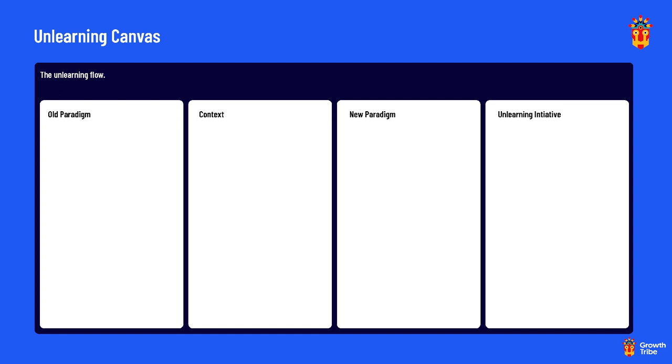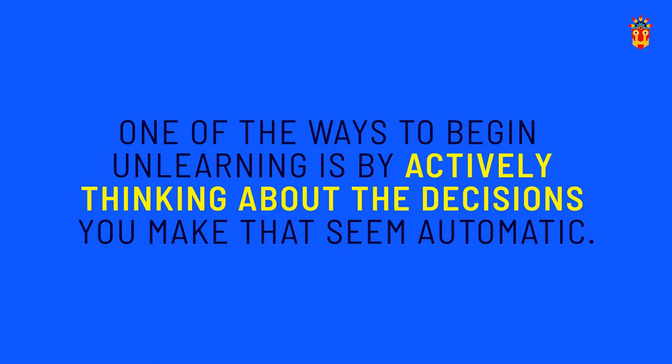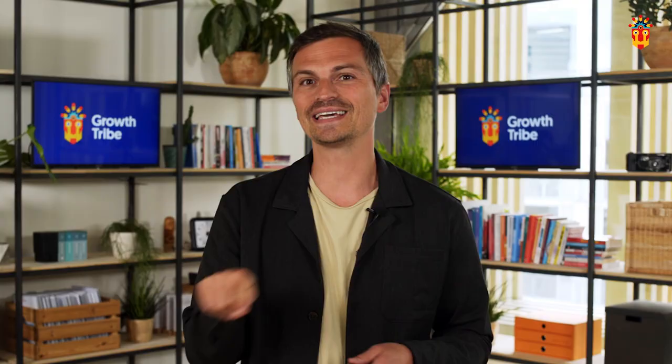The second book we advise is The Power of Habit by Charles Duhigg, which estimates that 40–45% of what we do isn't a decision at all — it's just a habit. These automatic actions occur because the thinking behind habits happens in one of the oldest parts of the brain, the basal ganglia, where thinking doesn't feel as active as in the prefrontal cortex. One way to begin unlearning is by actively thinking about decisions you make that seem automatic. Ask yourself: which beliefs, habits, and mindsets are serving you well, and which habits and knowledge aren't serving you as well as they once did?